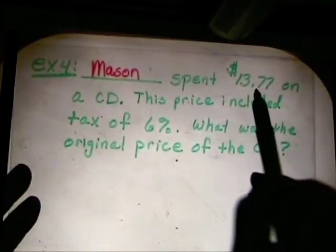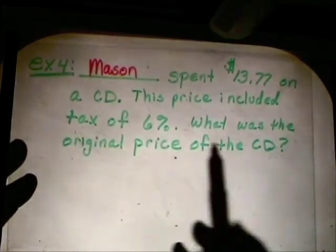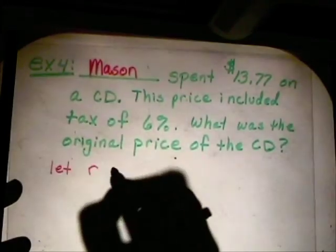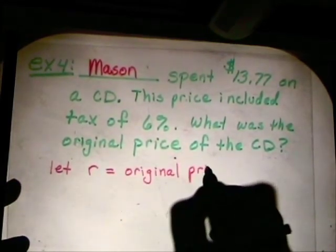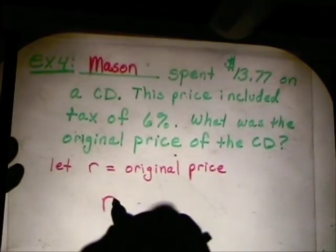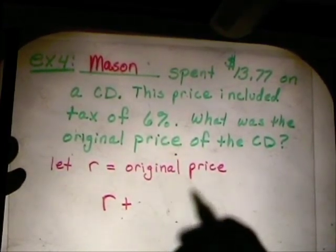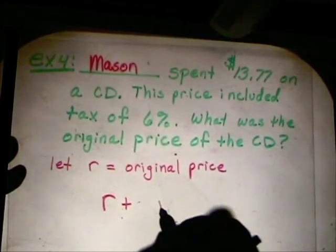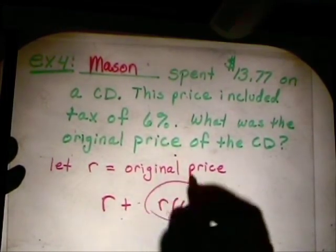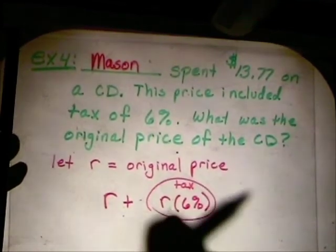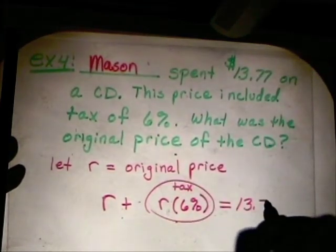Mason spent $13.77 on a CD. This price included tax of 6%. What was the original price of the CD? R equals original price. You take the original price plus. Now how do you figure out tax on the original price? You got to multiply it by 6%. So we're going to take the original price times 6%. That will give me, that right there, that expression will give me the tax. So if I add the tax onto the original price, the total they tell us in the problem is $13.77.